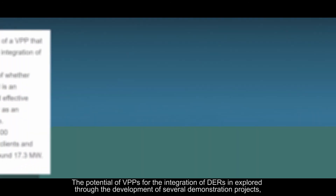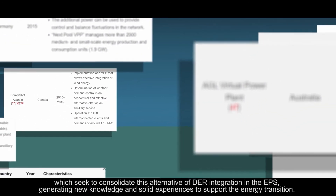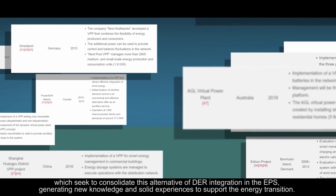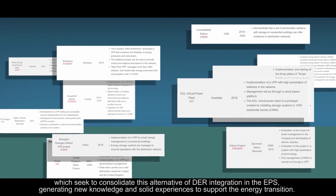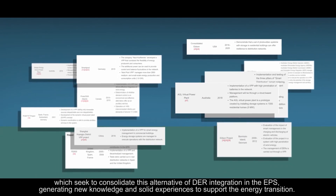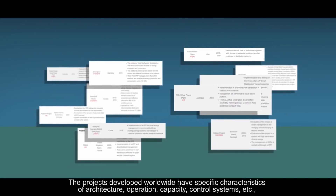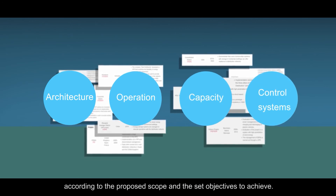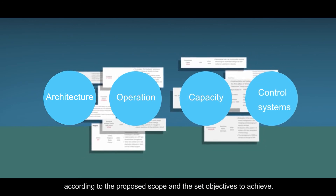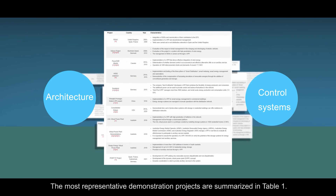The potential of virtual power plants for the integration of distributed energy resources is explored through the development of several demonstration projects, which seek to consolidate this alternative of distributed energy resources integration in the electrical power system, generating new knowledge and solid experiences to support the energy transition. The projects developed worldwide have specific characteristics of architecture, operation, capacity, control systems, etc., according to the proposed scope and the set objectives to achieve. The most representative demonstration projects are summarized in Table 1.